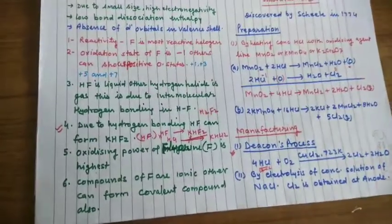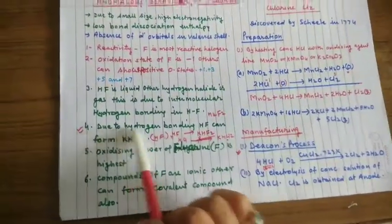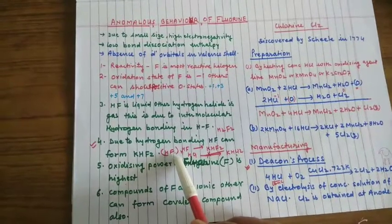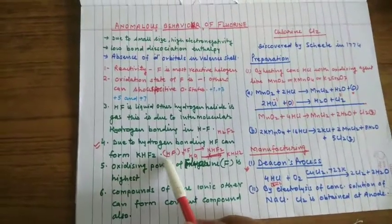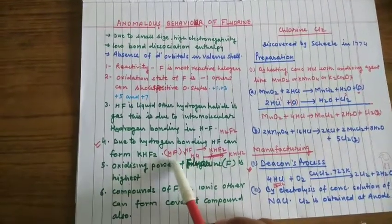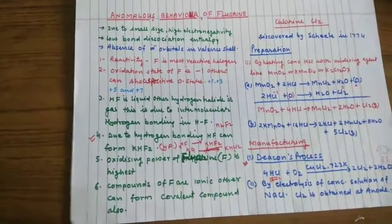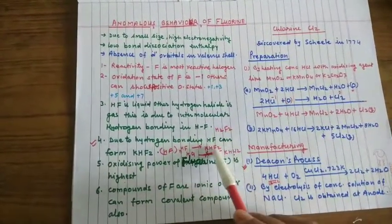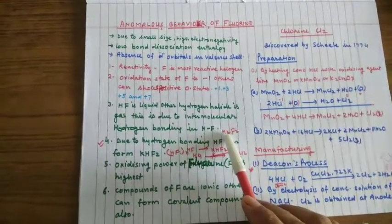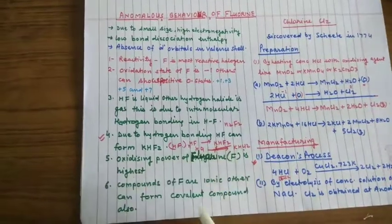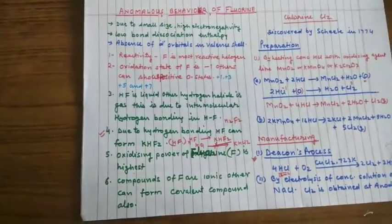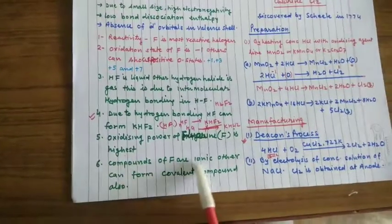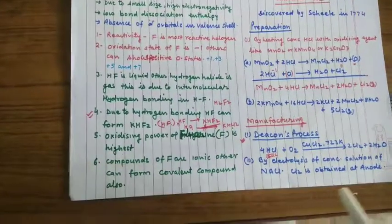If we talk about reactivity, fluorine is most reactive. Fluorine's oxidation state is only minus 1. It does not form stable compound in positive oxidation state. But other members form stable compounds in the positive oxidation states of plus 1, plus 3, plus 5, plus 7. HF is liquid, other hydrogen halides are gases. Again this is due to intermolecular hydrogen bonding. Due to hydrogen bonding, HF can form KHF2 salt. Due to extensive hydrogen bonding, HF can be written as (HF)n. Even in vapor phase, they are associated by hydrogen bonding. Two molecules join to form H2F2, it is acidic. It reacts with KOH to form H2O and KHF2 salt.